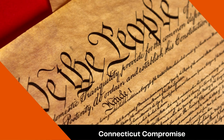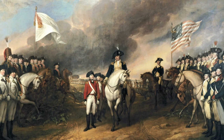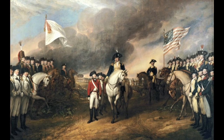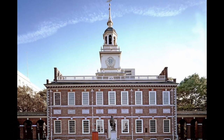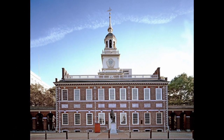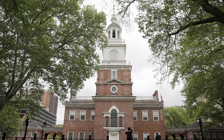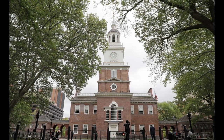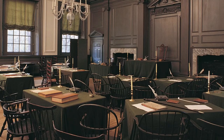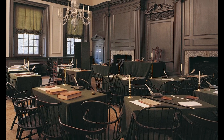Today on The Daily Dose, the Connecticut Compromise. After Britain's 1781 surrender at Yorktown, by 1786 it became increasingly apparent that the Articles of Confederation would prove insufficient to govern a young nation. In response, on May 25th, 1787, delegates representing every state except Rhode Island convened at Philadelphia, crafting a government model of checks and balances that nearly derailed over the issue of equal representation.